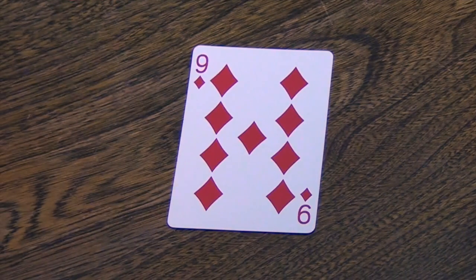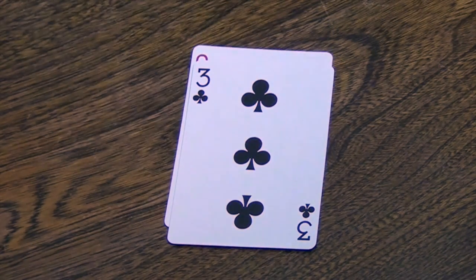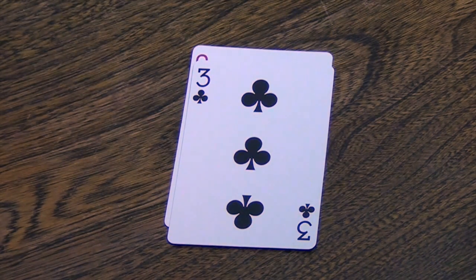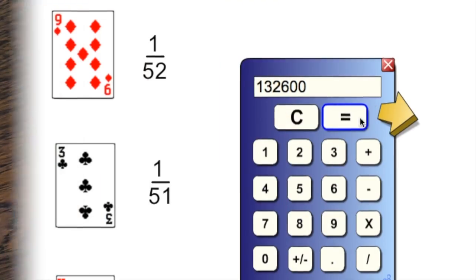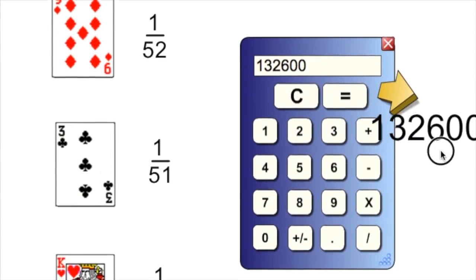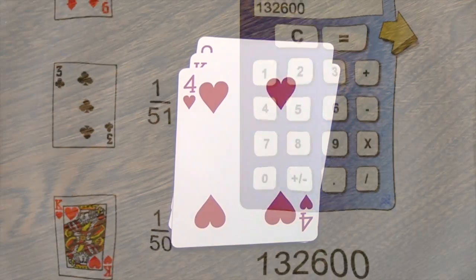So for every single card in the deck, there are 51 possibilities for the second card. And for every single one of those, there are 50 possibilities for the third card. So that means there are 132,600 possible combinations for just the first, second, and third cards in the deck.